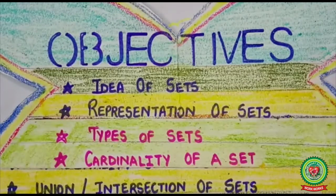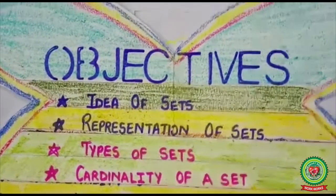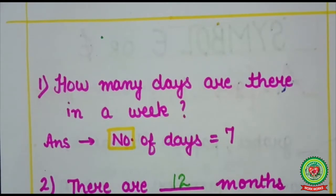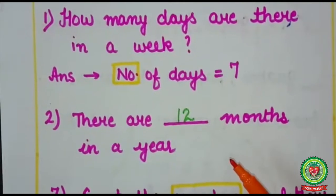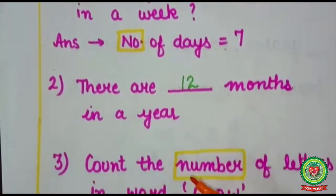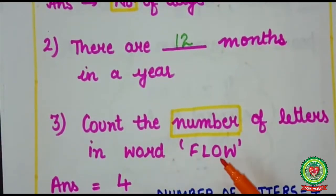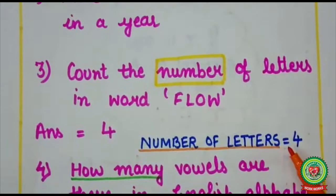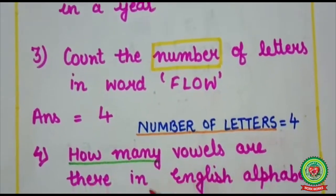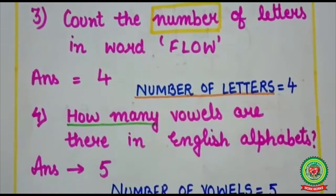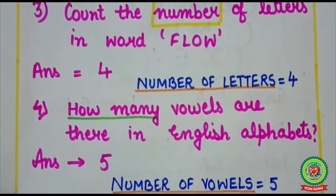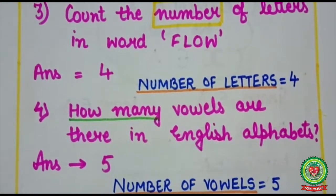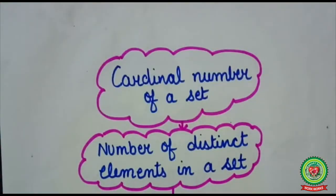Cardinality means size. It is also known as the cardinal number of a set. Before starting, let's have a look at the following questions. How many days are there in a week? There are 7 days, so the number of days in a week are 7. There are 12 months in a year. Count the number of letters in the word 'flow' — there are 4 letters. How many vowels are there in English alphabets? There are 5 vowels. As you can see, here we are talking about numbers, so this is our today's topic: Cardinal number of a set.